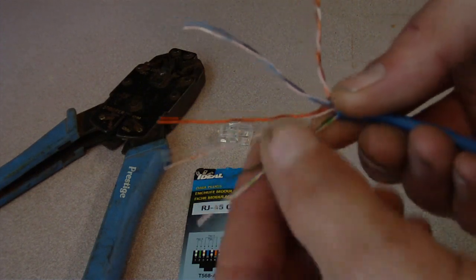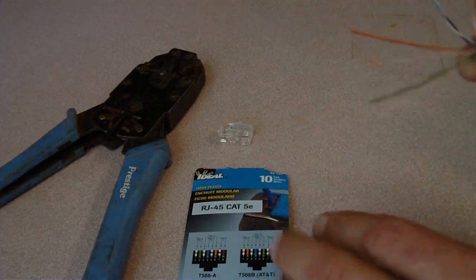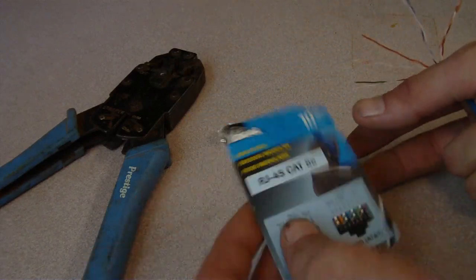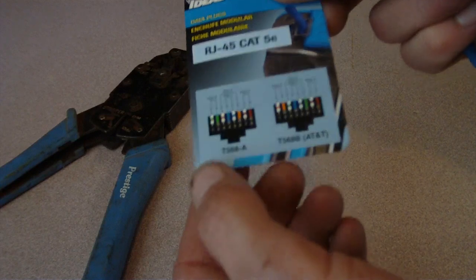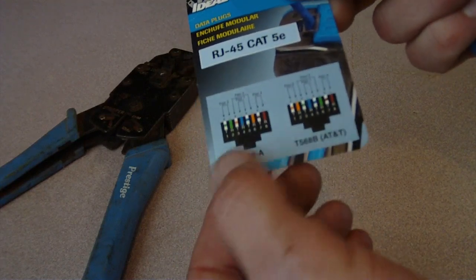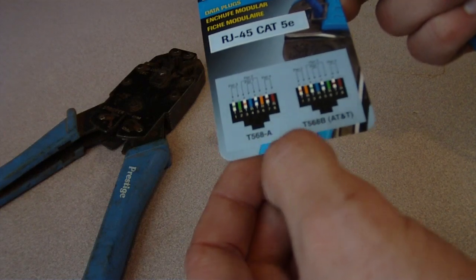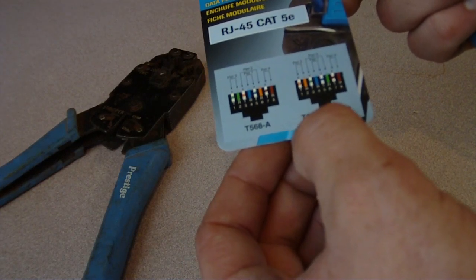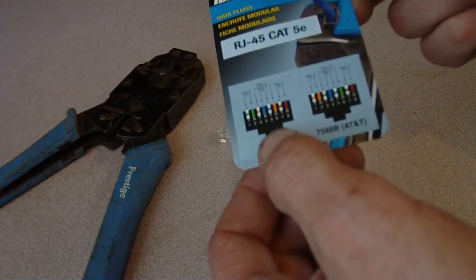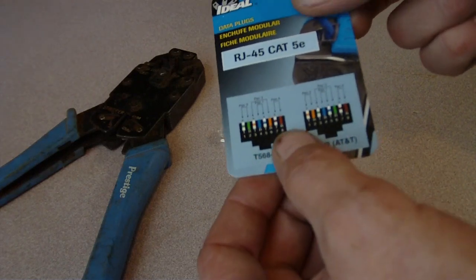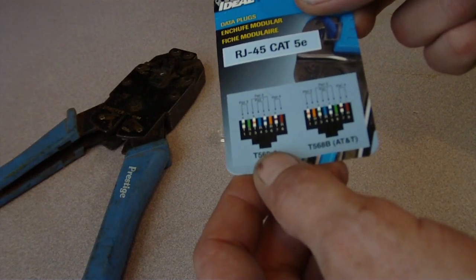And if you buy these ideal connectors, you'll notice that there's two configurations that you use: there's the T568A or the T568B for AT&T. Now generally, if you're just running your ethernet connections from one computer from your modem, it doesn't matter whether you use A or B so long as both ends are A.